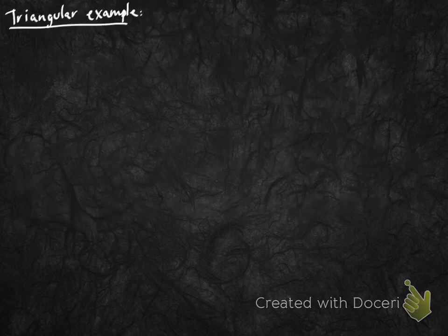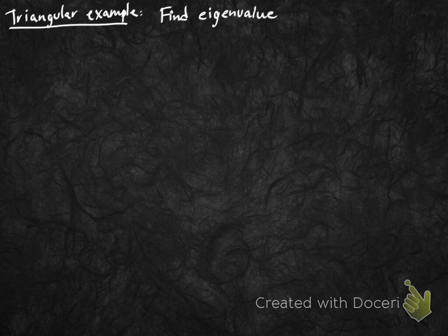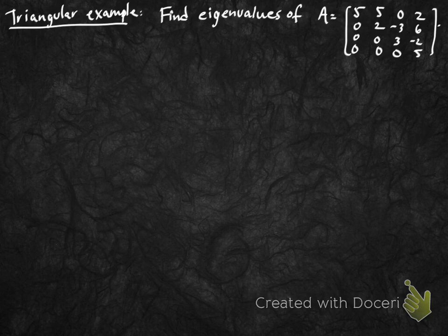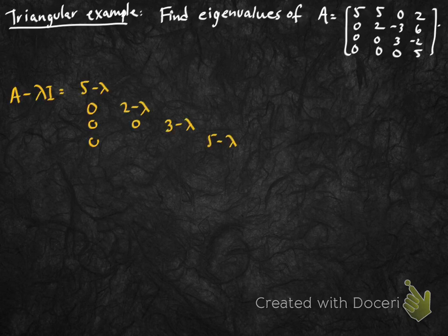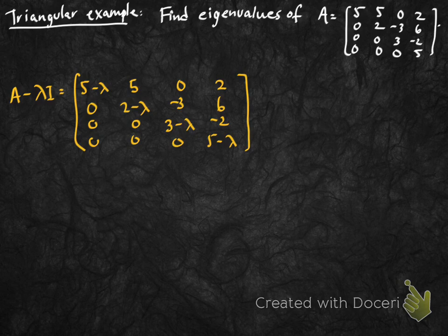Let's take a look at a triangular example that's slightly larger. Suppose we want to find the eigenvalues of this 4x4 matrix A given by [5,5,0,2; 0,2,-3,6; 0,0,3,-2; 0,0,0,5]. We compute A minus lambda times the identity, which subtracts lambda from the main diagonal. Notice we still get a triangular matrix out.